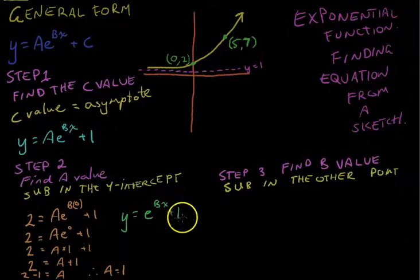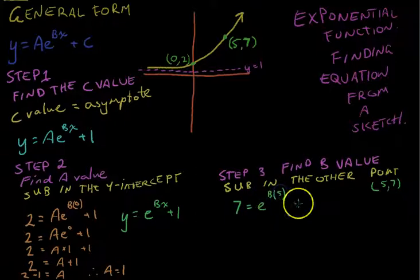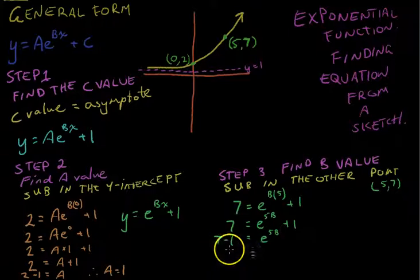Remember our A value is 1 and our asymptote told us that the C value is 1 as well. So we're going to sub in the other point, which is (5, 7). So y equals 7, meaning 7 equals e to the B times 5 plus 1. So 7 equals e to the 5B is another way of writing that. Plus 1, 7 minus 1 equals e to the 5B. So 6 equals e to the 5B.